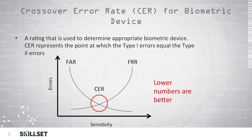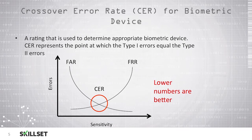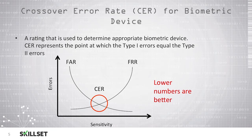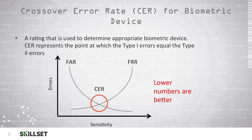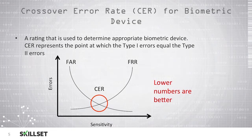When you're looking at the crossover error rate, it's important to remember for the examination that a lower number is better. Typically with computers, we're always looking for a higher number when it relates to processor speed or memory — usually the higher number is better. But here, the lower number is better, and you want to remember that for the examination, because you may see a question that asks about the crossover error rate.